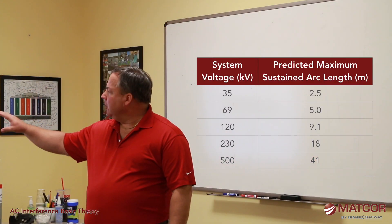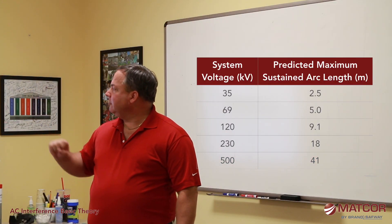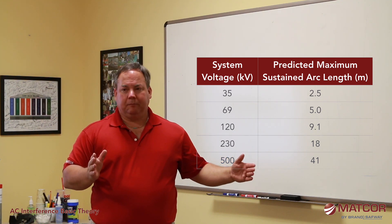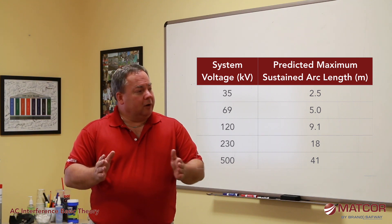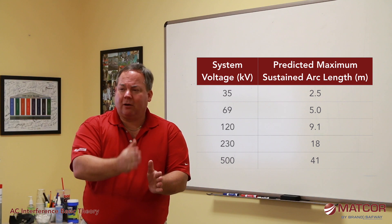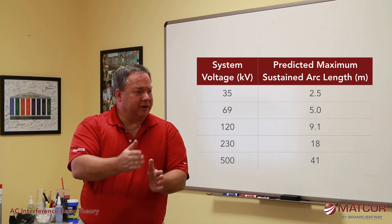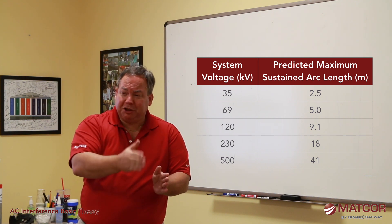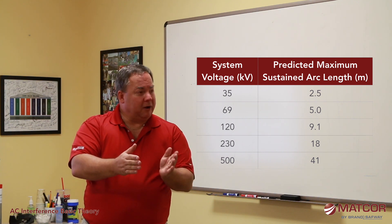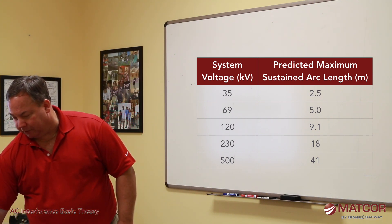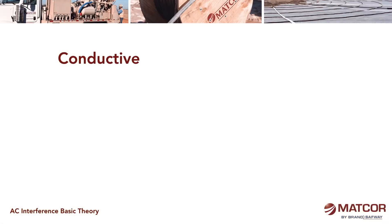Depending on soil resistivity and the voltage of the system, we can predict how far arcing can occur through the soil. If the pipeline is within that distance, we have to put some sort of shield in there that's going to take that arc before it gets to the pipeline — catch it and dissipate it. So we have to put something as a shield between the pipe and the tower footing where these faults occur.